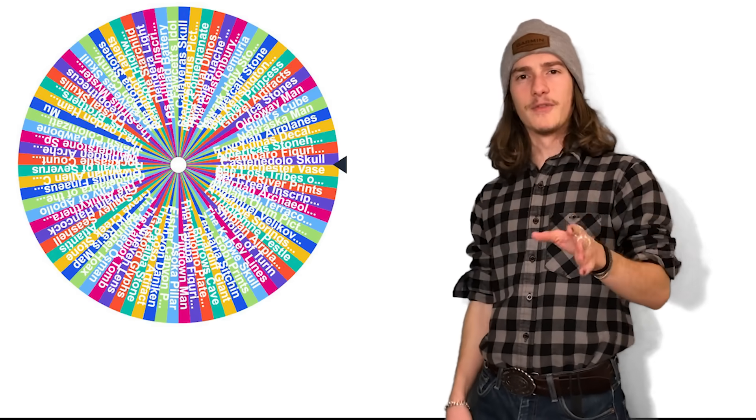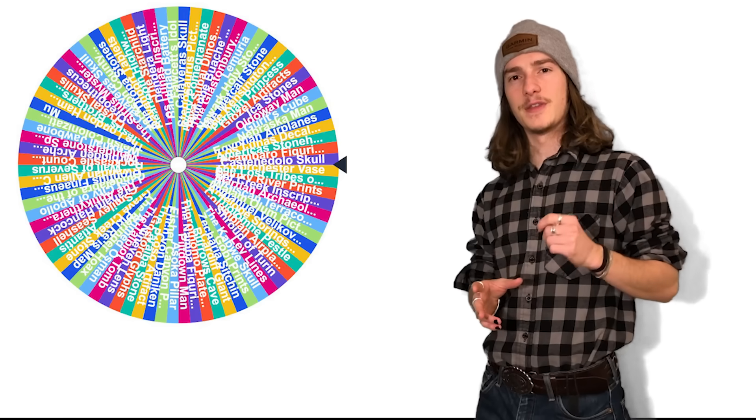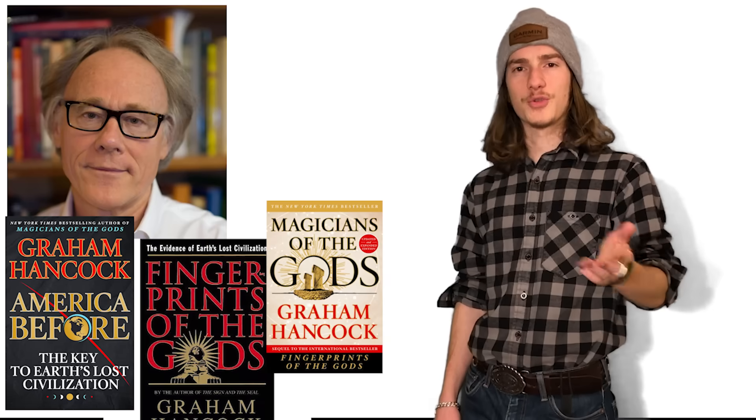So here's what it's all about. I have this gigantic wheel, and it is entirely covered in archaeological-based conspiracy theories. It's got things you know about, like Atlantis and the Baghdad Battery, and it's got some other lesser-known stuff, like the Beartooth Highway Molar and the Castanedolo Skull. It's also got some big names in pseudo-archaeology, people like Erich von Däniken and, of course, Graham Hancock.